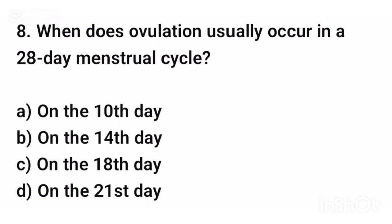Question number eight. When does ovulation usually occur in a 28-day menstrual cycle? The correct answer is option B: On the 14th day.